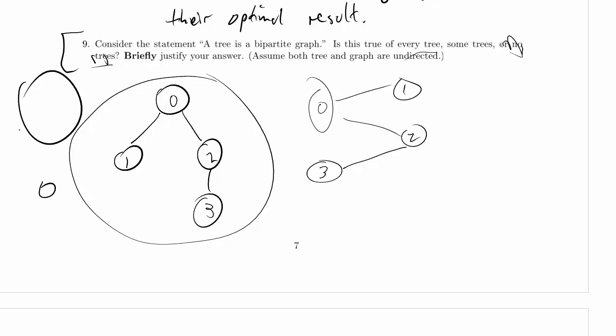So we can always write a tree so that it's divided up into levels with that property. And that means we could say that even levels are on one side of the bipartite graph and odd levels are on the other side.